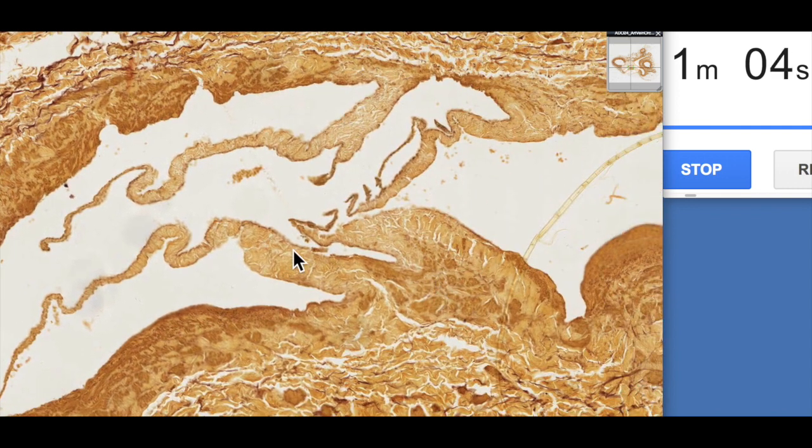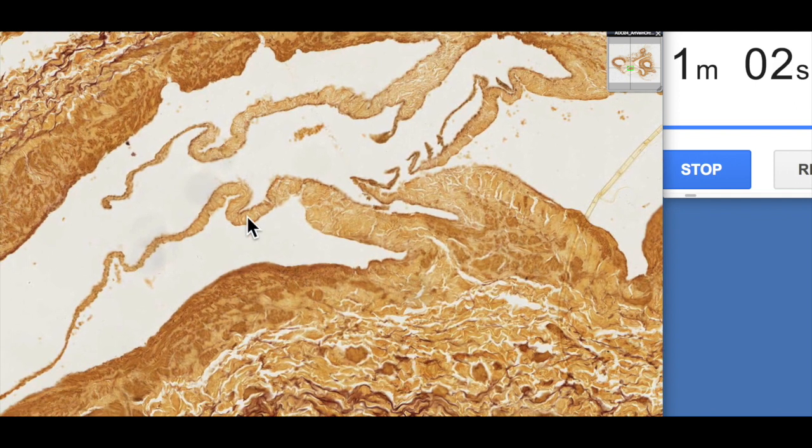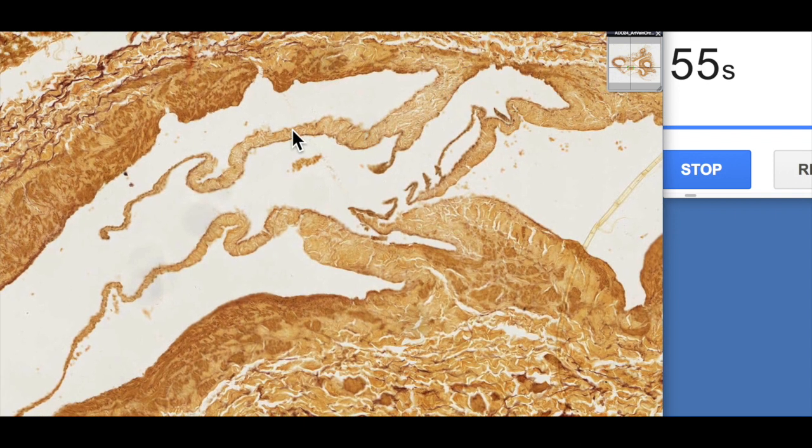And the other feature which is present here, which isn't present in the arteries, of course, are these valves. These are a couple of leaflets of these valves, which are extensions of the tunica intima.